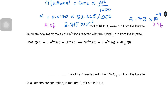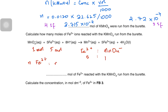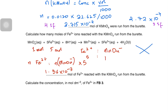Calculate how many moles of iron reacted with KMnO₄. From the equation, the Fe²⁺ to MnO₄⁻ ratio is 5:1. So moles of iron = moles of manganate × 5 = 2.715 × 10⁻⁴ × 5 = 1.36 × 10⁻³ mol. Note that writing cross-multiplication informally is not acceptable working and will not receive a mark — you must show the full working properly.